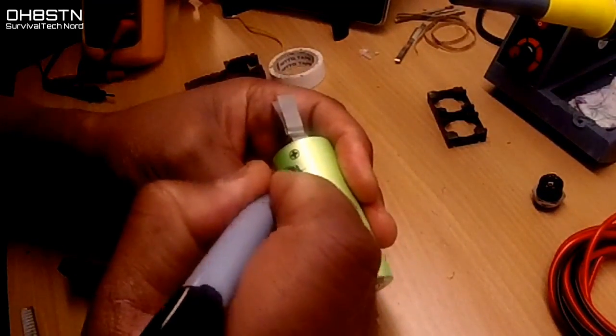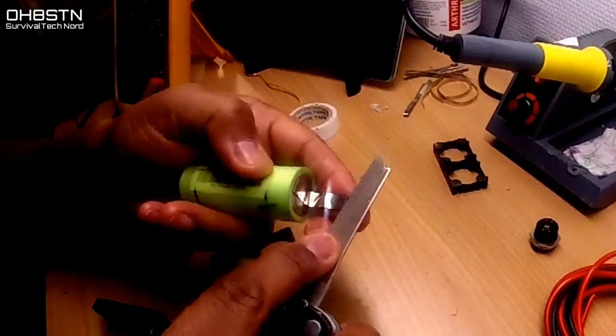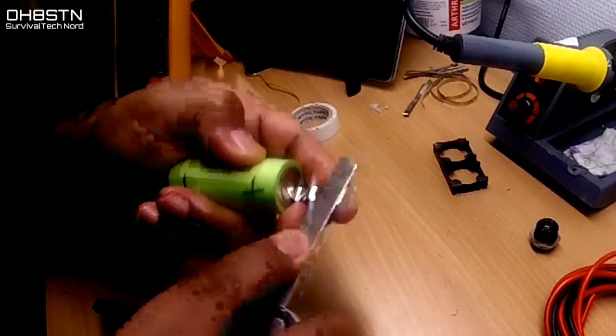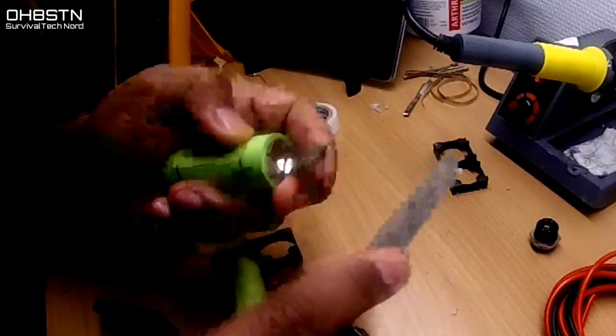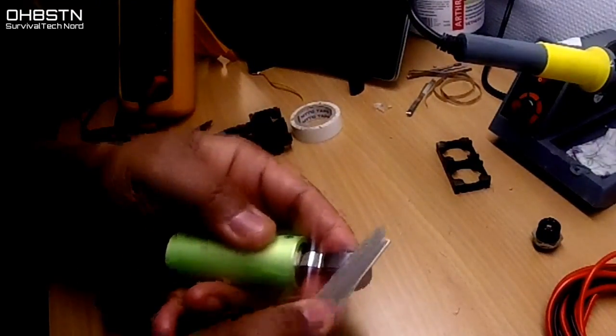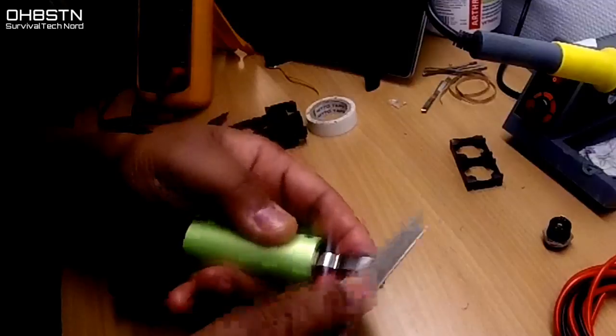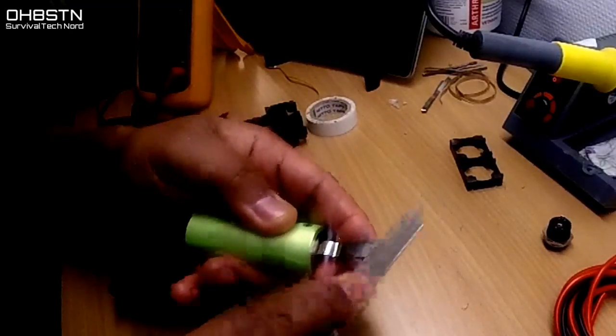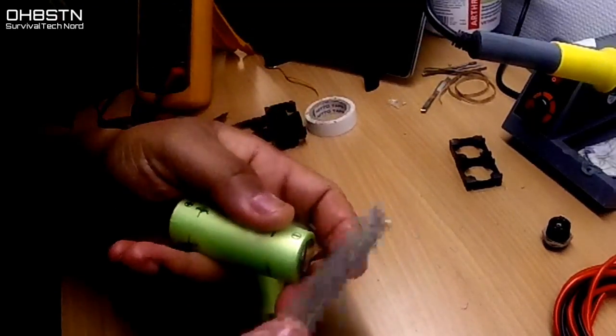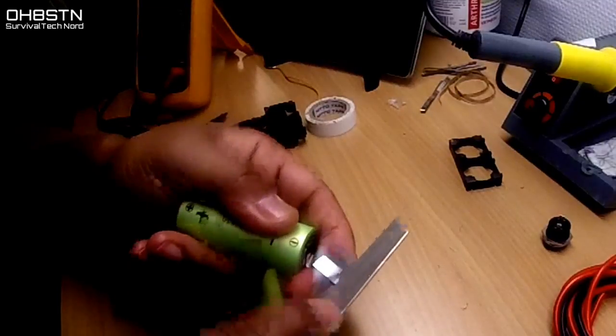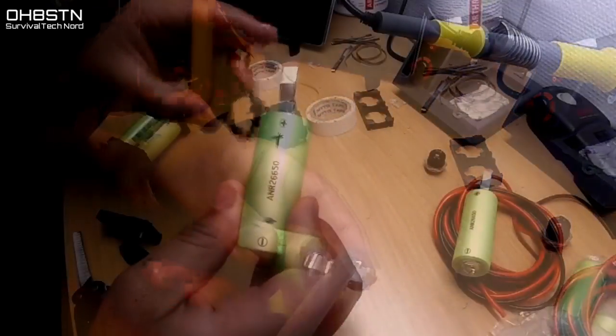Next we're going to roughen up the tabs so that they're easier to solder to. I thought it was enough to roughen up just the tips of the tabs because that's where the connections are going to be made. I did both sides. Go ahead and do this to all of your cells.